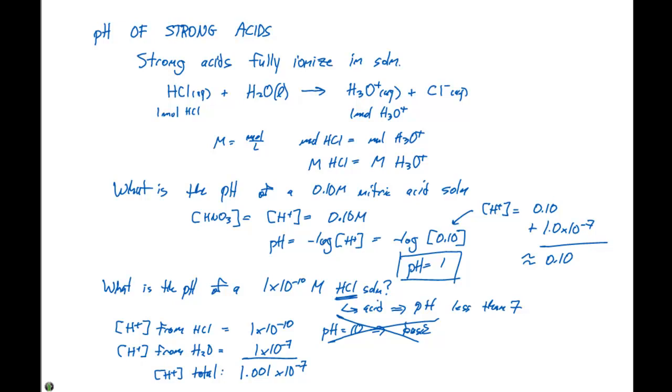And if we took the negative log of this value, our pH is gonna equal 6.9996, which is roughly equal to 7. So don't get tricked here by saying that there's a pH of 10.